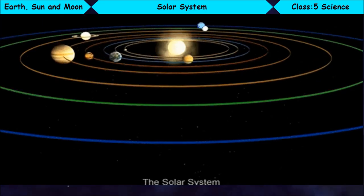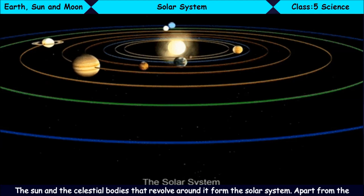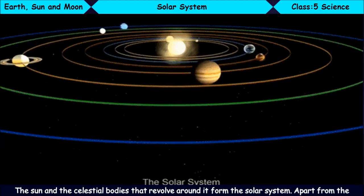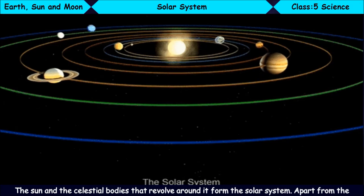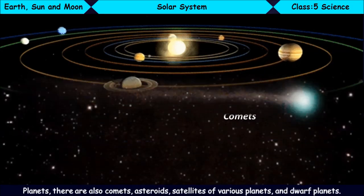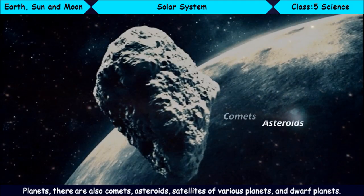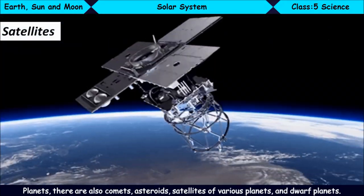Solar system. The sun and the celestial bodies that revolve around it form the solar system. Apart from the planets, there are also comets, asteroids, satellites of various planets.